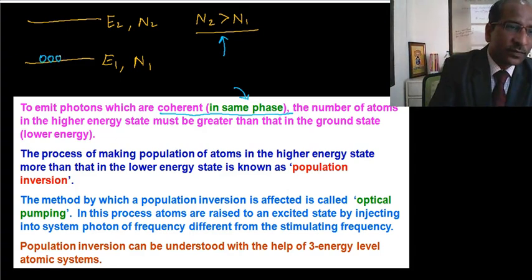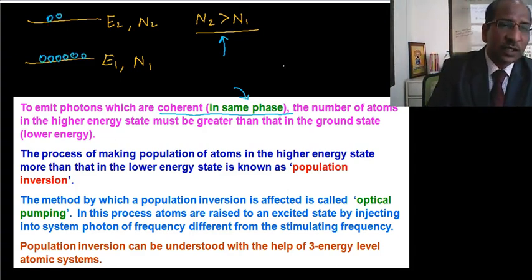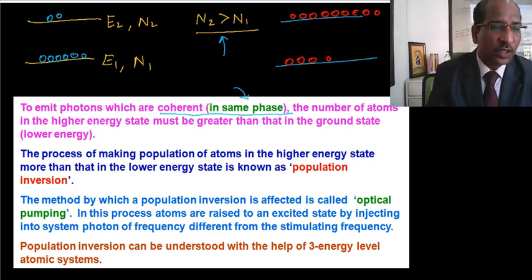So in the first picture, you can see this was the first case. And now the situation is like this. Here large number of atoms, you can see. So obviously the population has been inverted. So this is the idea of population inversion.